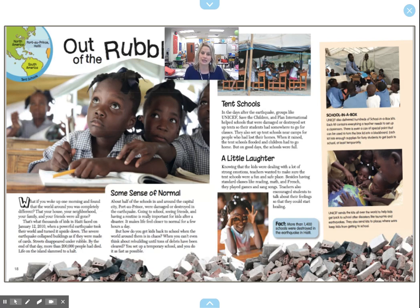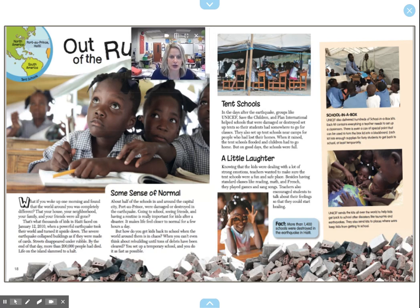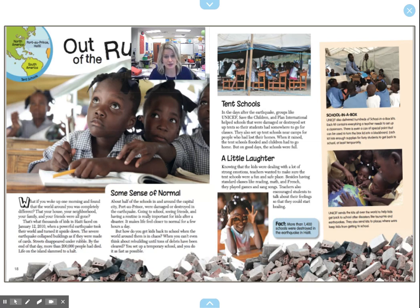What was this passage mostly about? It was about how they had to set up the tent schools. What do you notice about the tent schools? If you take a look at the picture right here and at the other pictures, what do you notice? I notice that there are tents, there are a lot of children and desks in those tents, there are no walls, and the tents look pretty big if you look closely at the picture.